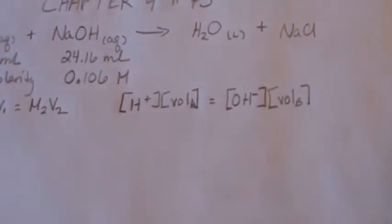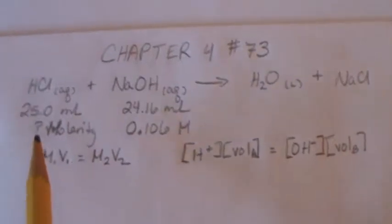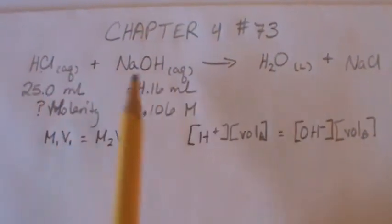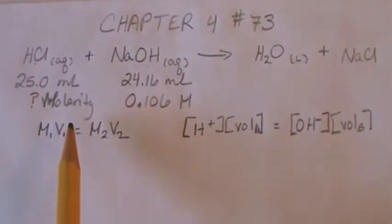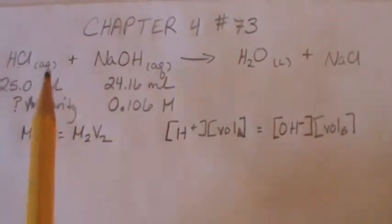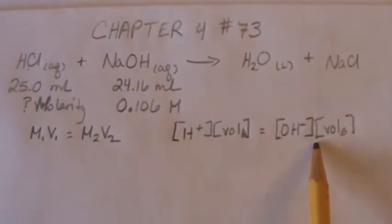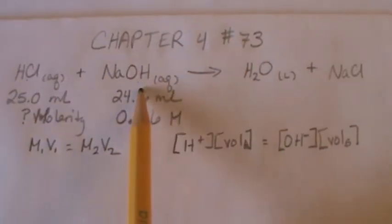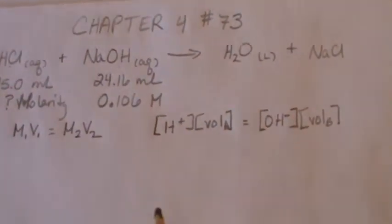Now in this case we're dealing with HCl and NaOH. So there's one proton in HCl and one hydroxide in NaOH. That means our molarities of our compound is the same as our molarities of H plus and OH minus. If we had diprotic or had more than one hydroxide, then we'd have to take that into account.